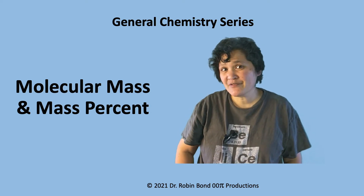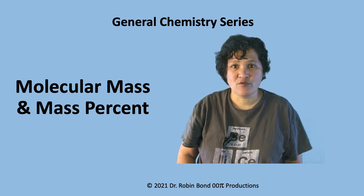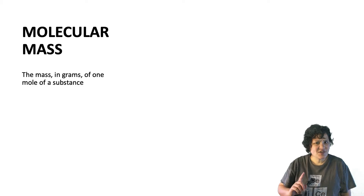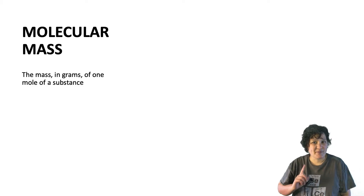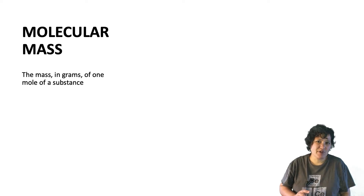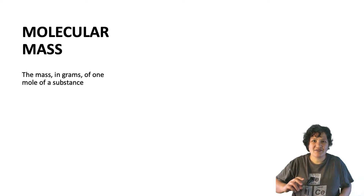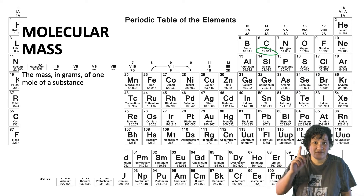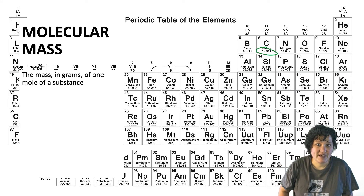Molecular mass can be defined as the mass of one mole of a particular molecule. You could also call this the molar mass of that molecule — that's almost always how I will refer to it in class. It differs a bit from the molar mass of an element, because you actually have to calculate it. The molar mass of an element you can just find on a periodic table.